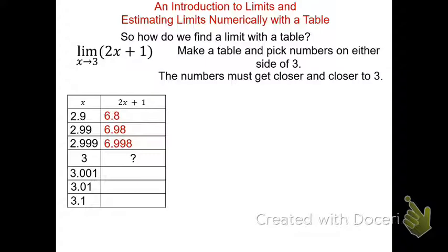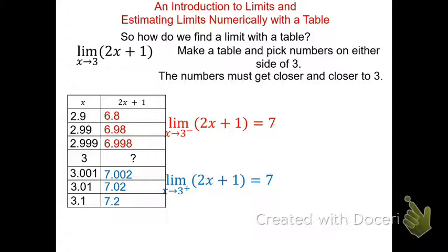From the right-hand side: 2 times 3.001 plus 1 is 7.002. Evaluating the rest, we go from 7.2 to 7.02 to 7.002 — getting closer and closer to 7. So the limit of 2x + 1 as x approaches 3 from the left equals 7, and from the right also equals 7. Because both limits are approaching the same unique number, the limit exists, and we write: the limit of 2x + 1 as x approaches 3 is 7.